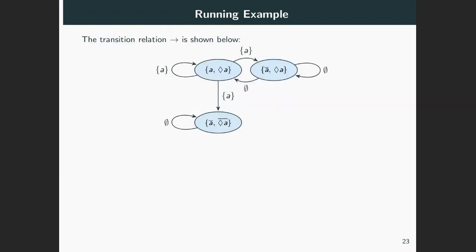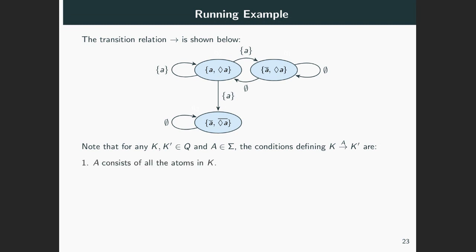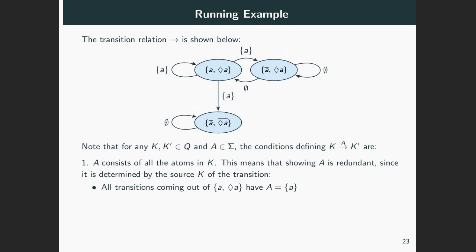It remains to see how the transition relation looks like in our example. It connects states via edges labeled with letters. Remember that a state is a scenario, that is a set of formulas, while a letter is a set of atoms. Let's recall the conditions defining our automaton's transition relation. There are two types of conditions. First, we require that when K transits somewhere through some set of atoms, say capital A, then this set of atoms should consist of all the atoms in K. This means that capital A is actually redundant since it is completely determined by the source K of the transition.